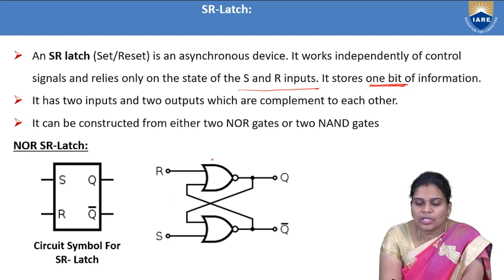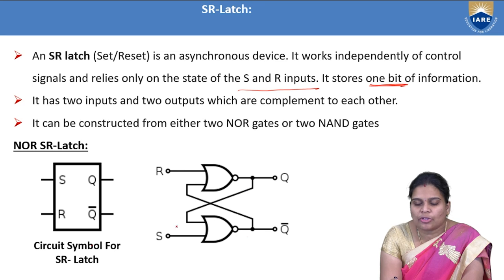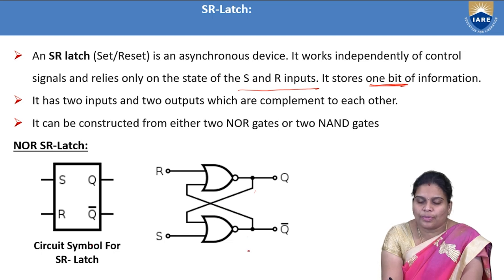The logic symbol for the NOR gate SR latch has Set (S) and Reset (R) as inputs, and Q and Q-bar as outputs. The circuit is bidirectional in nature — the first gate's output is connected to the second gate's input, and the second gate's output is connected back to the first gate's input. This is the bidirectional feedback connection in sequential circuits.